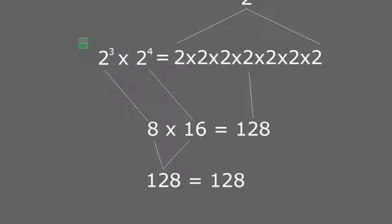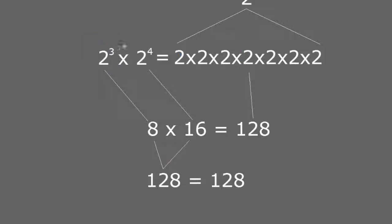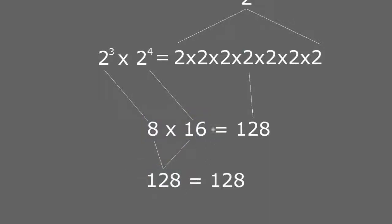And 2 cubed is 8 — 2 times 2 times 2 — and 2 to the power of 4 is 16 — 2 times 2 times 2 times 2 equals 16. So 2 to the power of 3 times 2 to the power of 4 is the same as multiplying 8 times 16, which equals 128, which is the same as 2 to the power of 7, which is also 128.